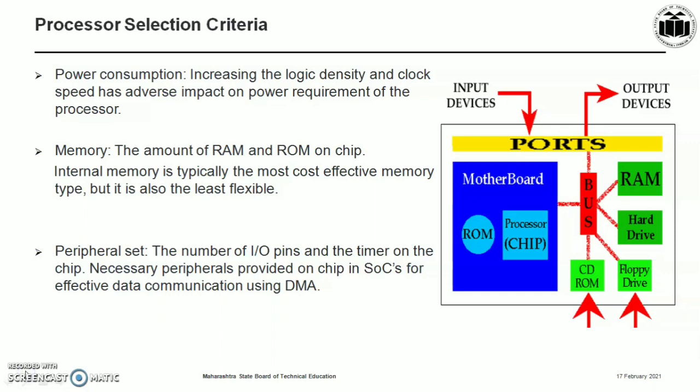The next criteria is peripheral set. Every system design needs, apart from the processor, many other peripherals for input and output operations — the number of IO pins and timers on the chip. Necessary peripherals provided on-chip in a system-on-chip architecture support effective data communication using direct memory access.